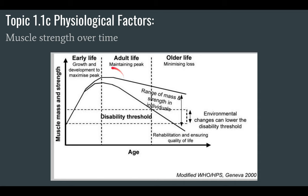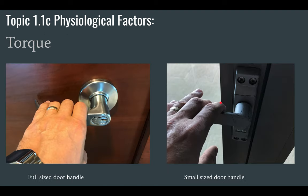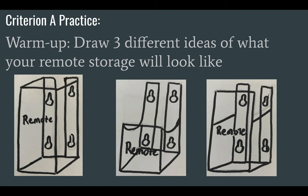Torque is used here as an example of why you need to design with muscle strength over time in mind. For young adults, they probably won't need a device to help them open a jar. But in older age, that's something you might need because you wouldn't have the strength to open the jar. That's it — thanks for watching.